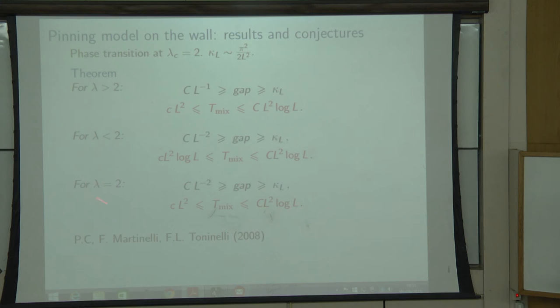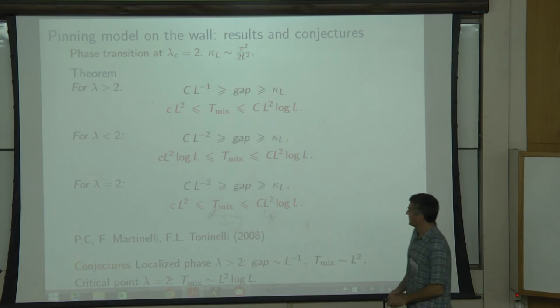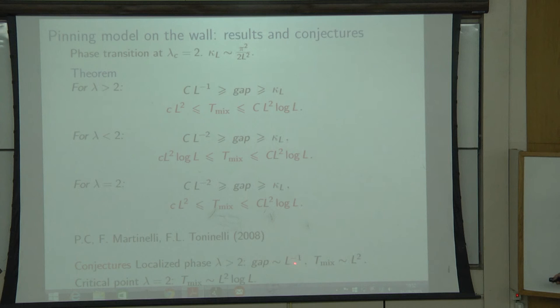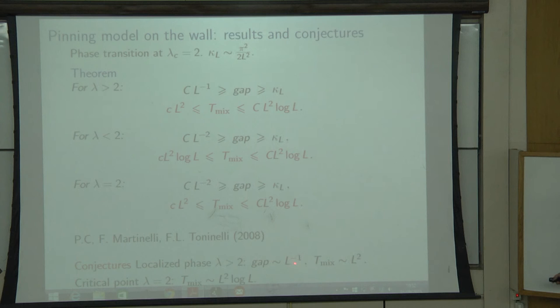For the critical case of the wetting transition, we can prove diffusive behavior of the spectral gap, but we cannot decide between L^2 and L^2 log L for the mixing time. I would believe it is L^2 log L. The conjectures are: for the localized phase, the gap is 1/L and the mixing time is L^2; at the critical point, the mixing time should be L^2 log L.